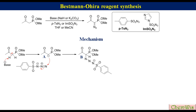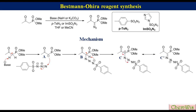Species B undergoes intramolecular proton transfer to generate species C. The other resonance structure of species C can be drawn as C'. C' then eliminates the para-toluenesulfonamide anion to produce the Bestmann-Ohira reagent.